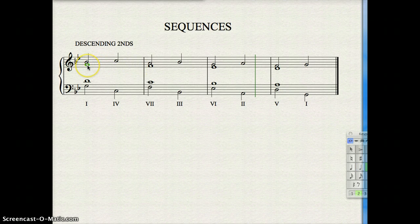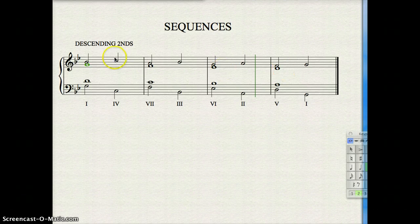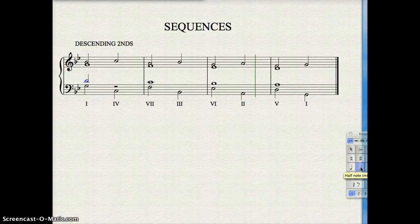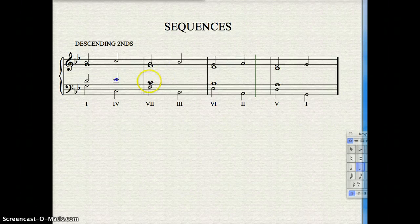Alto voice, the doubled root in the 1 chord is the 5th of the 4 chord, so it doesn't need to change at all. The tenor voice, the 5th of the 1 chord goes up and does the 3rd for the 4, and we'll continue on.